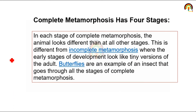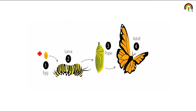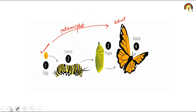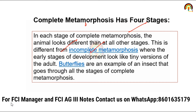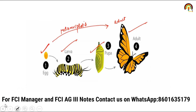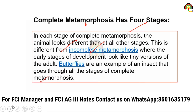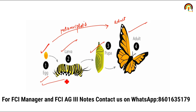Next आता है Metamorphosis। Metamorphosis का मतलब होता है — जब insect egg form से adult form में जाता है, तो उसके body में जो changes आते हैं उसको Metamorphosis बोलते हैं। Metamorphosis के अंदर first phase egg phase है, फिर larva form में convert होता है, then pupa, and then finally adult form में। Metamorphosis में total 4 stages हैं: Egg, Larva, Pupa, and Adult। In each stage of complete metamorphosis, the animal looks different than all other stages.